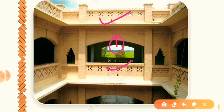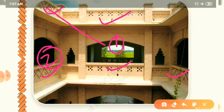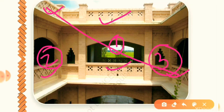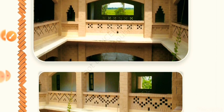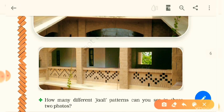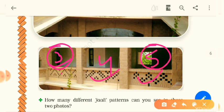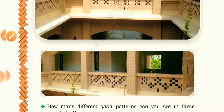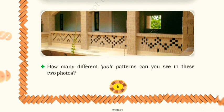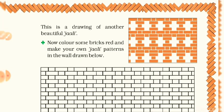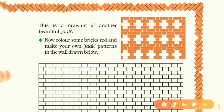Let's count the jali patterns. On the top you can see two similar jali patterns — that's our first. The next one is different, so that is our second. Two more that are the same count as our third. This third jali pattern also matches a pattern in the second photo. Then we have the fourth and fifth. So in total we found five jali patterns in these two photos.